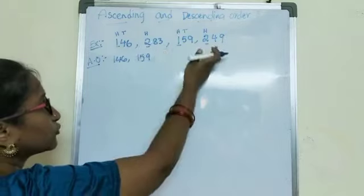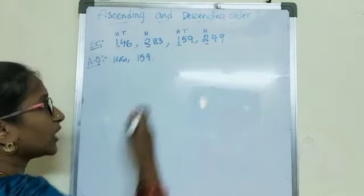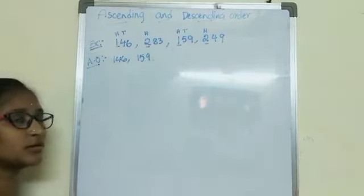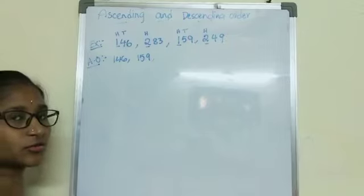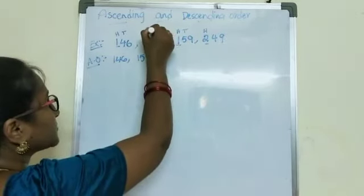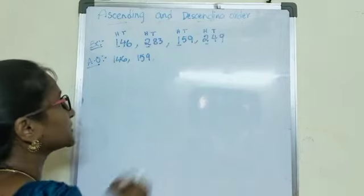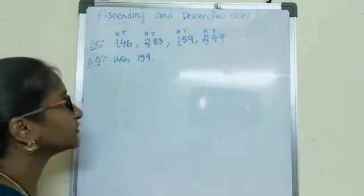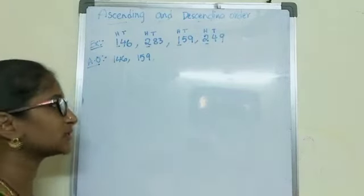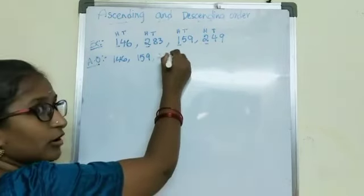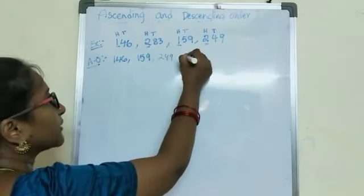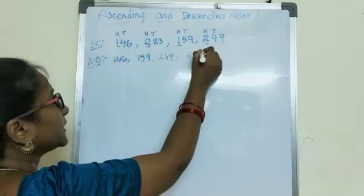We have two 200s — let me check which is the smaller among those two. Tens place in 283 is 8, tens place in 249 is 4. Which is the smallest? 8 or 4 — yes, 4. So next is 249, then 283.